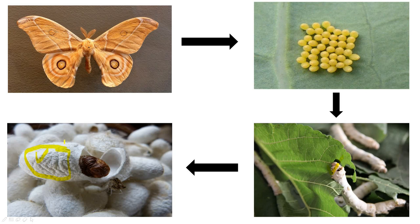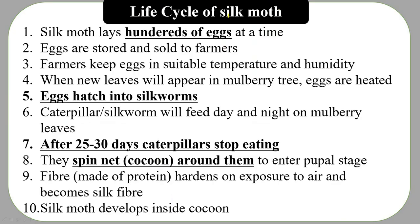After 2 to 3 weeks, the silk moth will come out of the cocoon. So the life cycle is: moth gives eggs, eggs hatch into larvae or caterpillars, worms eat for 25 to 30 days, cover themselves with cocoons, and after 2 to 3 weeks, moths emerge. The cocoon stage is the pupa stage and the silkworm stage is the larval stage.